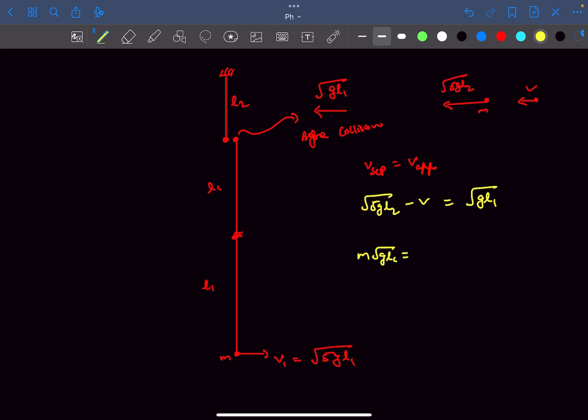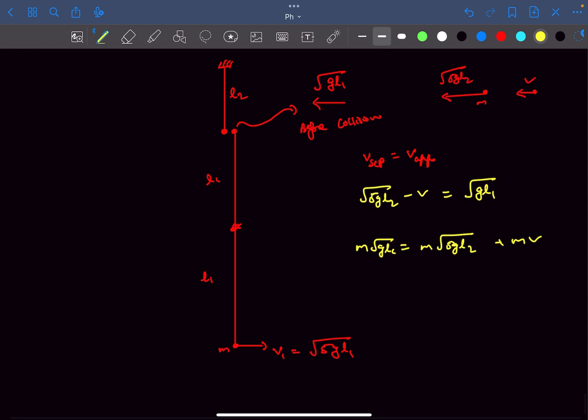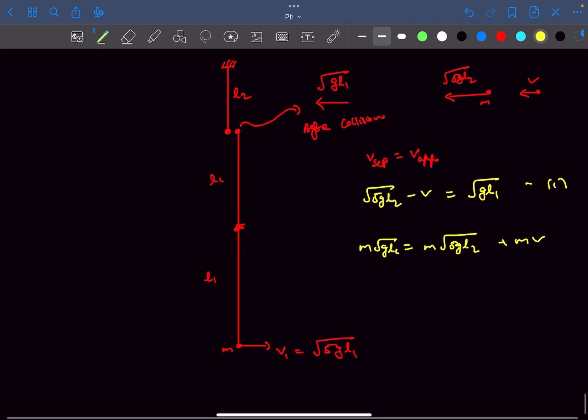Now if I subtract equation 1 and equation 2, we get v equals 0, which means this bob of mass m comes to rest after collision.